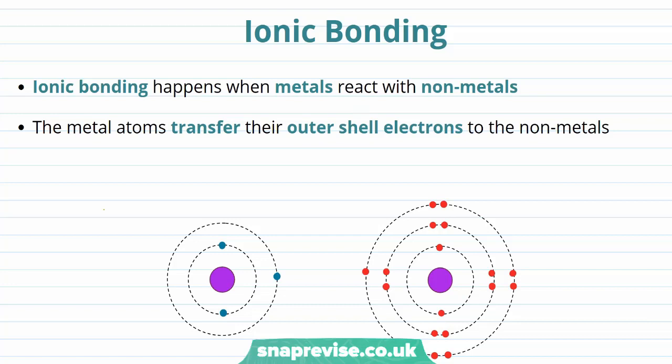Ionic bonding is what happens when metals react with nonmetals. As the name suggests, ionic bonding involves the formation of ions, which are atoms or groups of atoms that have a charge.